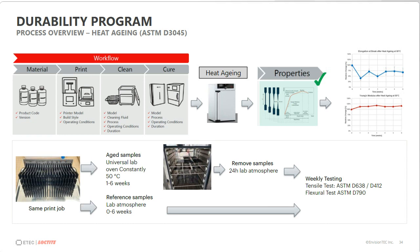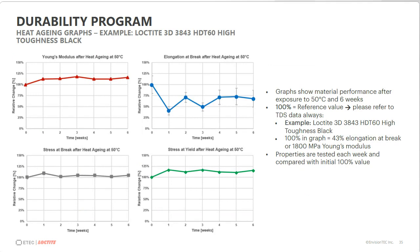For heat aging, we store test specimens in an oven at a constant temperature of 50°C for six weeks total, measuring changes in mechanical properties at one-week intervals. Every interval, samples are removed and stored for 24 hours at ambient conditions to ensure they're at room temperature before testing. Depending on the material, we run different test standards: D638 for tough materials (type 4 dog bone), D412 for elastomeric materials, and D790 flex test for high modulus and very rigid materials.